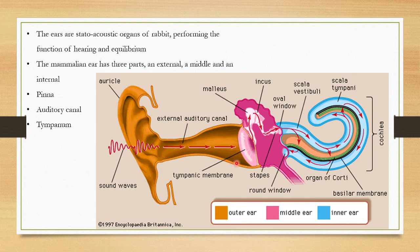The auditory canal area is provided with a number of hair cells, oil glands, and wax glands. Their secretions prevent injury from microorganisms and small insects. The second part is the middle ear.